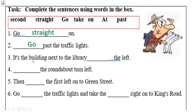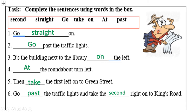Number three — it is a building next to the library on the left. Number four — at the roundabout, turn left. Number five — then take the first left onto Green Street. And the last one — go past the traffic lights and take the second right onto King's Road.